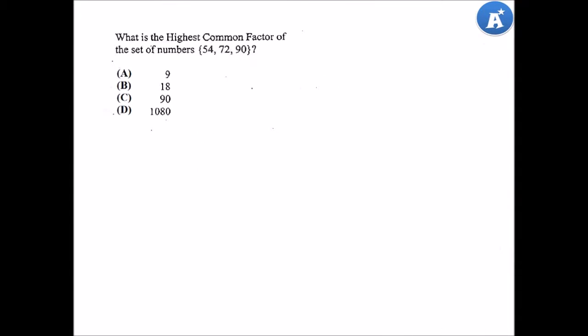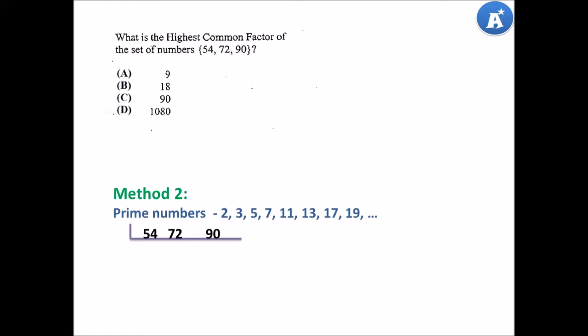Let's take a look at Method 2. Method 2 uses prime numbers. Do you remember your prime numbers? Here they are for your refreshing — we have 2, 3, 5, 7, 11, 13, 17 and 19. Now in this method, we use our prime numbers to resolve the numbers. In selecting a prime number, you select a number that can go into all three numbers at the same time.